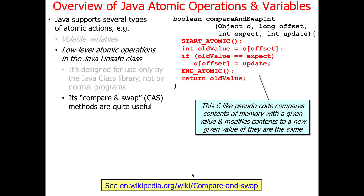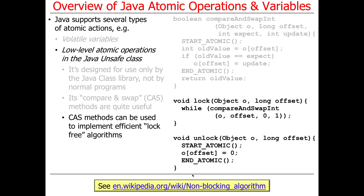In this atomic region — shown as C-like pseudocode — we offset into the object and read the old value. If the old value equals what we expect, we atomically update that portion of the object at the offset location to the new value, and then return the old value. So compareAndSwap only updates if the current value matches the expected value; otherwise it does nothing. This can be used to implement lock-free algorithms, which means you're not blocking — you're just spinning — and there are many good reasons to do that.